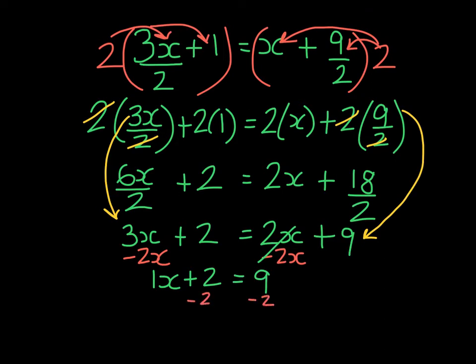And we are left with 1x equals 7. Although this method of getting rid of denominators seems like more work at first, once you get the hang of it, it gives you an equation that is easier to solve than the original.